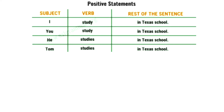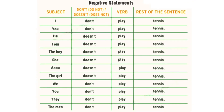Here are some more examples. In negative statements: 'I don't play tennis.' Here, 'I' is the subject, 'play' is the verb, and 'tennis' is the rest of the sentence. 'You don't play tennis.' Here, 'you' is the subject, 'don't play' is the verb, and 'tennis' is the rest of the sentence. 'He doesn't play tennis.' Here, 'he' is the subject, 'play' is the verb, and 'tennis' is the rest of the sentence.